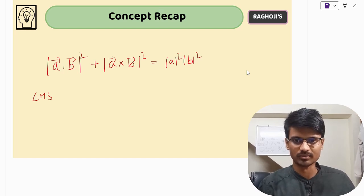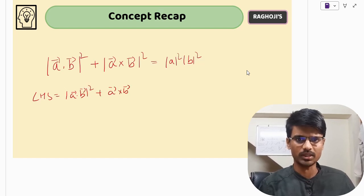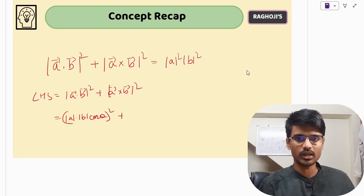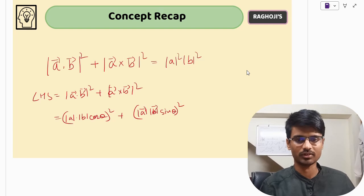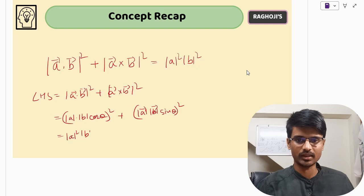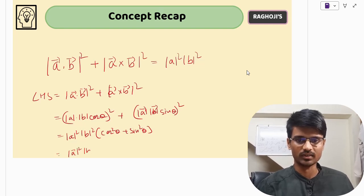First, let us focus on the LHS. In LHS, you have (A·B)² + (A×B)². A·B, as you all know, is the scalar product, so you have cos θ. The magnitude of the cross product is |A||B|sin θ. Taking the magnitudes common, you get cos²θ + sin²θ, which as you all know is equal to 1.